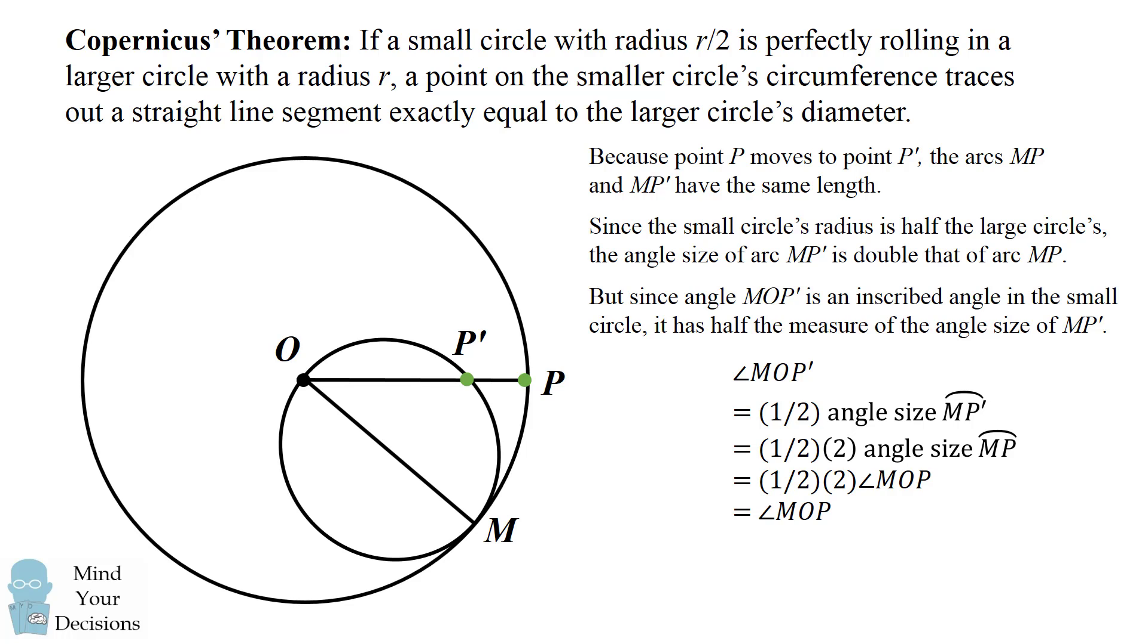Next, we have the angle size of MP' is equal to two times the angle size of MP, the arc. This is because we have the small circle subtending an arc of the same length as the larger circle with twice the radius.